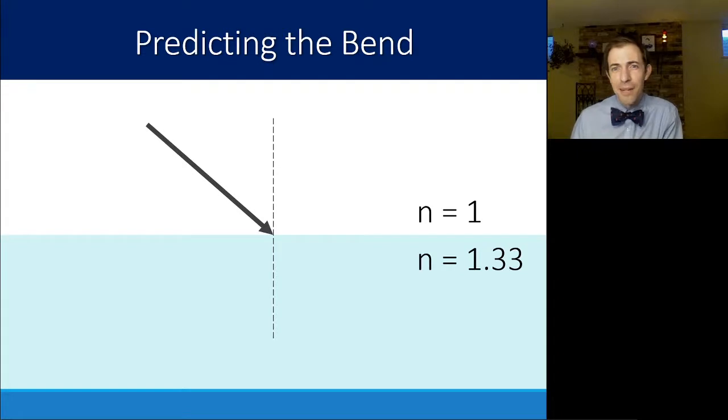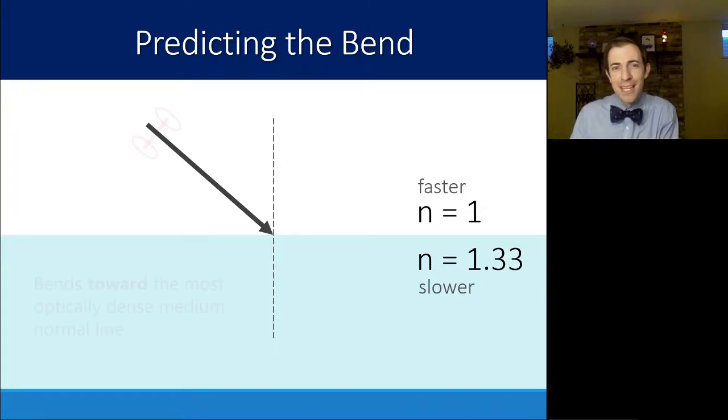The last piece that we're going to talk about in this particular video is how you can predict which way it's going to bend. So here I've got a light ray that's entering from air and going into water. That's 1.33. That's the only reason I know that that's water. So through air, light travels a lot faster. And through water, light travels slower. The best way that I have found to predict the way that this bends is to imagine this two-wheeled cart that's traveling through. And if you want, you can imagine that you're pushing that two-wheeled cart through something that travels faster like the driveway into something that's slower like mud or the grass.